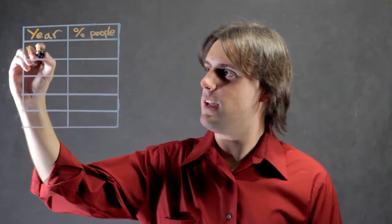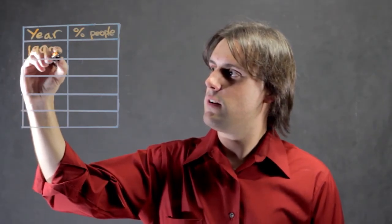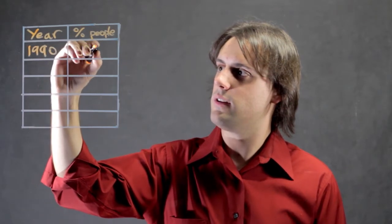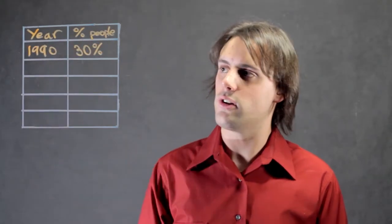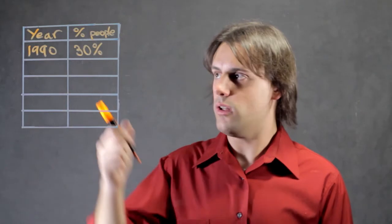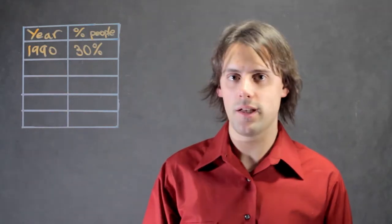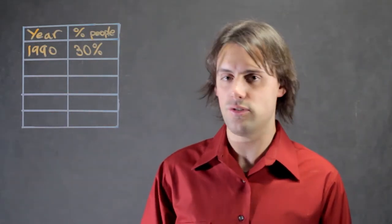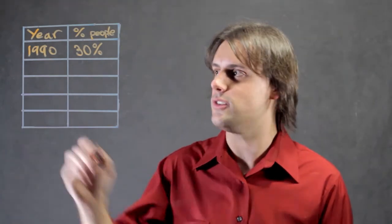Let's say in 1990, we have 30% of people preferring chocolate to vanilla. If we have more data, then we can start to build statistics, and this would be one of the purposes of tabulating percentages.